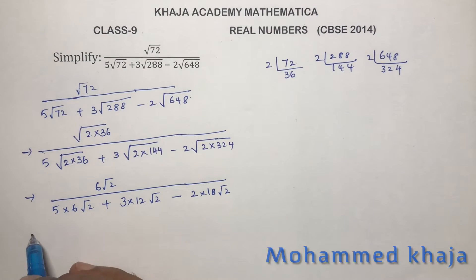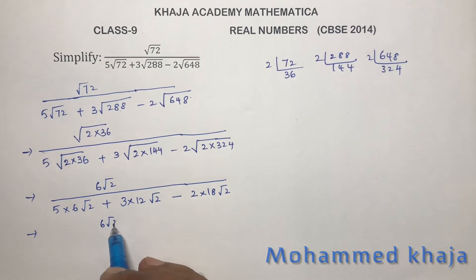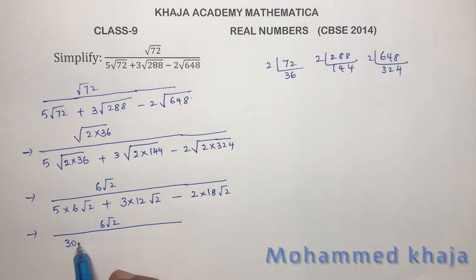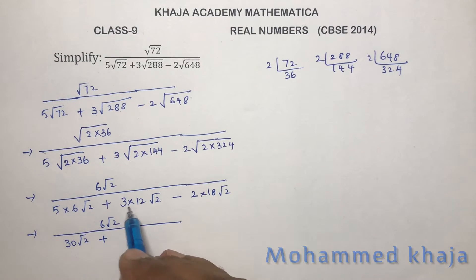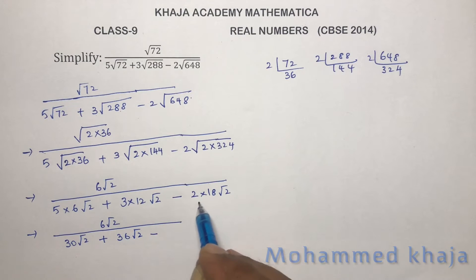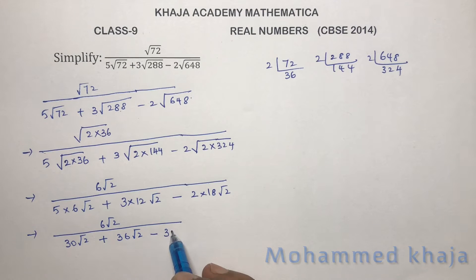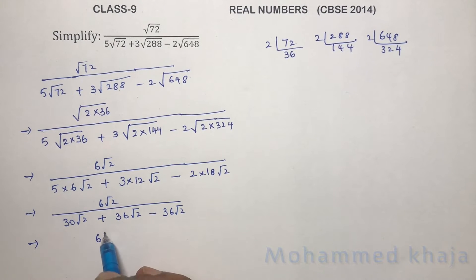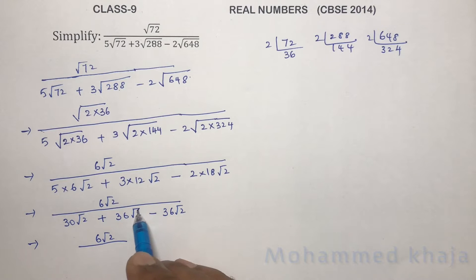Next step: numerator is 6√2. Denominator: 5 × 6 = 30√2, plus 3 × 12 = 36√2, minus 2 × 18 = 36√2. So the denominator becomes 30√2 + 36√2 − 36√2, and 36√2 − 36√2 cancels out, leaving 30√2.